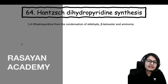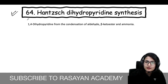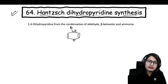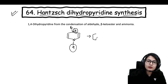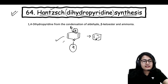Hello everyone, welcome to Rasayan Academy. We are on to the 64th name reaction today. This name reaction is a little bit complicated, but I'm trying to simplify it for you. The name reaction is the Hantzsch dihydropyridine synthesis, which involves the synthesis of a heterocyclic compound — your 1,4-dihydropyridine. It is called dihydropyridine because on positions 1 and 4 you have hydrogens; it is not a complete pyridine molecule.